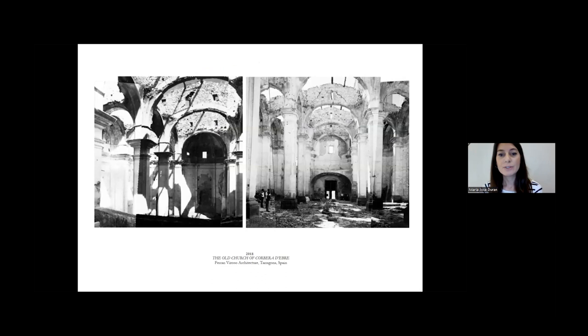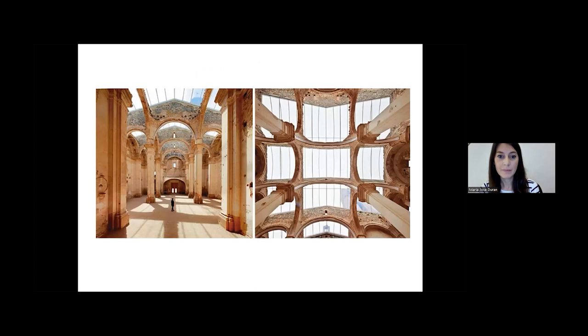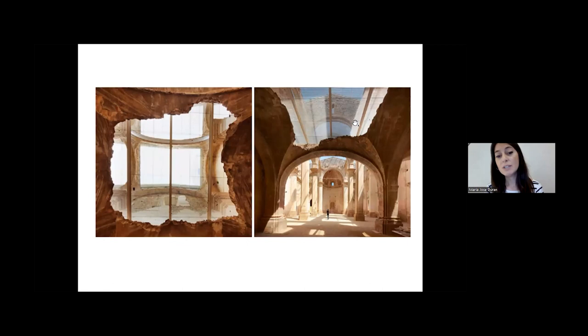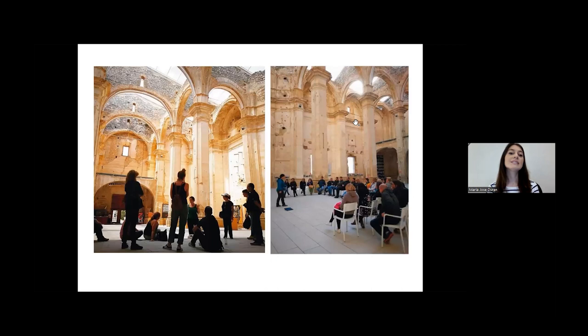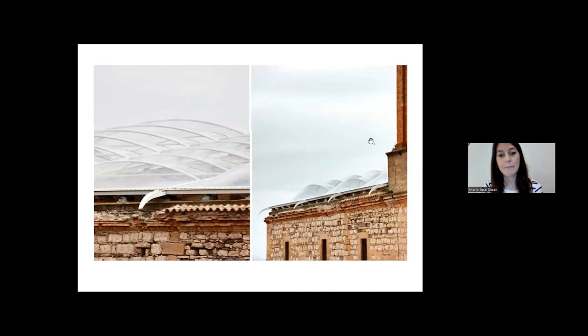The old church of Corbera d'Ebre by Ferran in Spain had to restore the public use of the church in a new multifunctional space. The challenge was not to change the appearance, as it is a symbol of a battle from the Spanish Civil War. The solution was to close the ceiling with a transparent material, giving the perception of being outside when you enter the church. With this solution, the intervention as a new public use of the church helps local people to reconcile themselves with their childhood playgrounds.